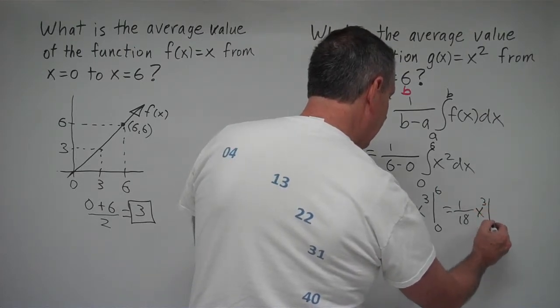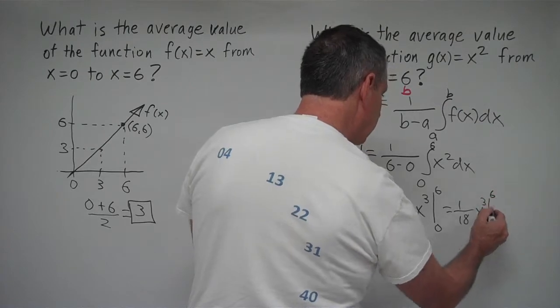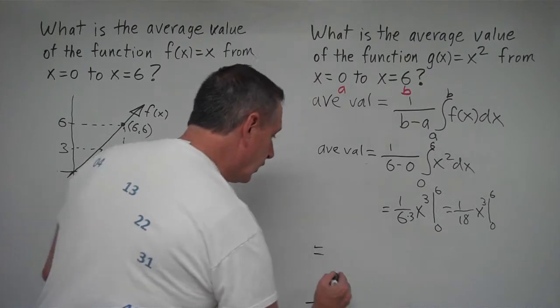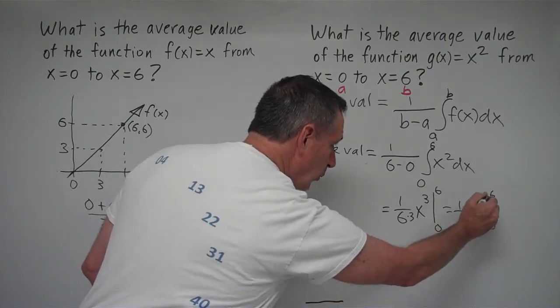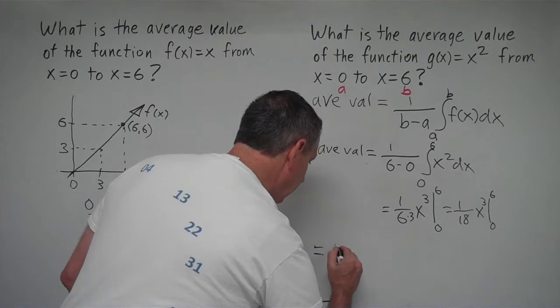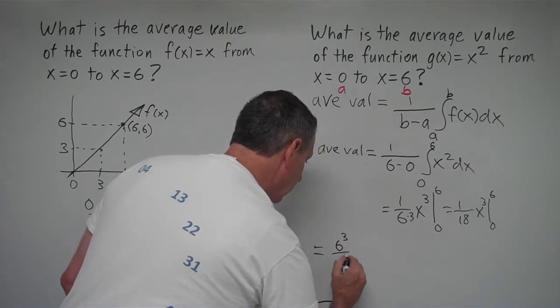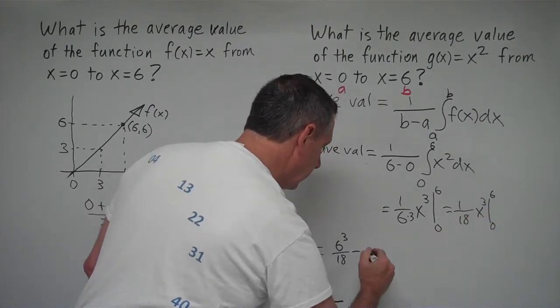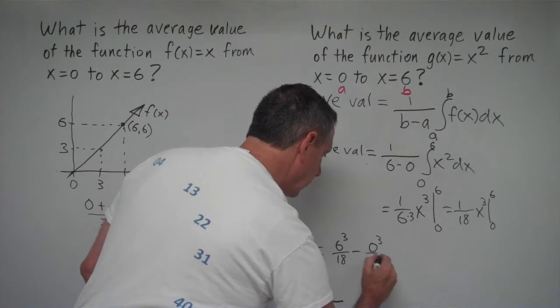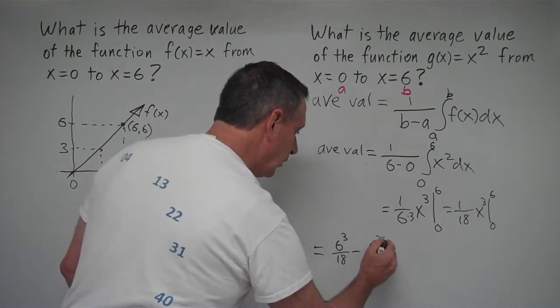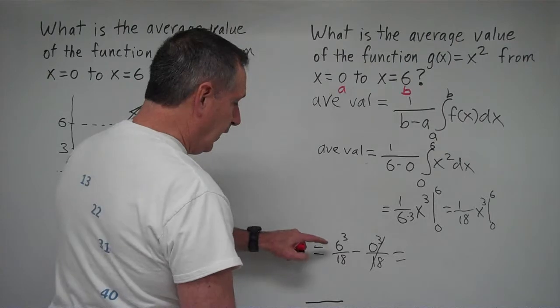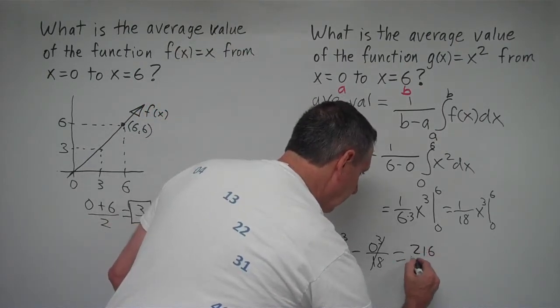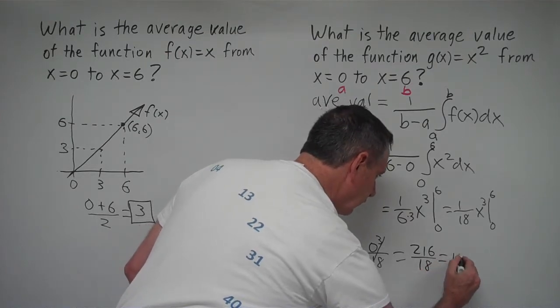x cubed from 0 to 6. And now evaluating, and over here to the left, we're going to get x cubed at 6. That's going to be 6 cubed divided by 18 minus the 0. We're going to have 0 cubed over 18. Well, 0 cubed is 0. We don't need to worry about this. And 6 cubed is 216. 216 divided by 18 equals 12.